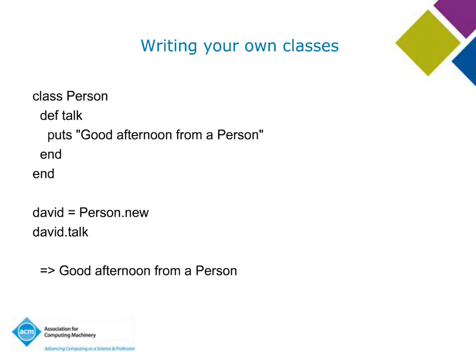Speaking of classes — every object is an instance of a class. Here's an example of writing a class of your own, a class called Person. This Person class has one instance method called `talk`, which prints 'good afternoon from a person'. The class definition opens with `class Person`, I define the method in the middle, and end the class definition with `end`. After that, I create a new person: `david = Person.new`, I send David the `talk` message, and I get the expected message.